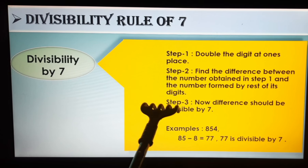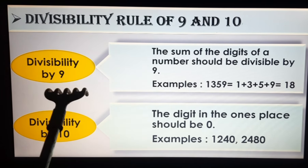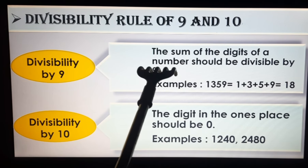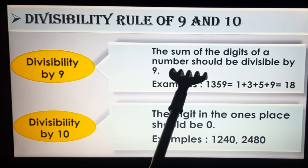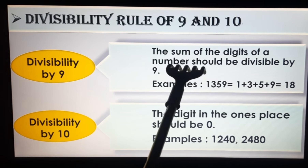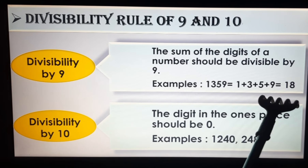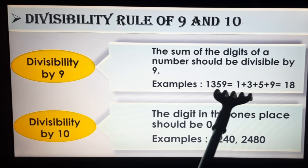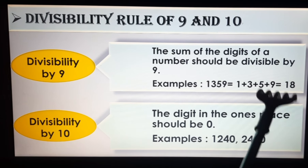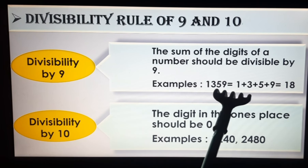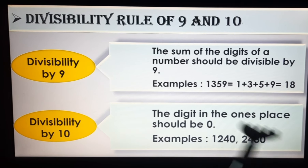Next is the Divisibility Rule of 9. The rule is: the sum of the digits of a number should be divisible by 9. This rule is exactly like the rule for 3. For example, take 1359: 1 + 3 + 5 + 9 = 18. Since 18 is divisible by 9, 1359 is divisible by 9.